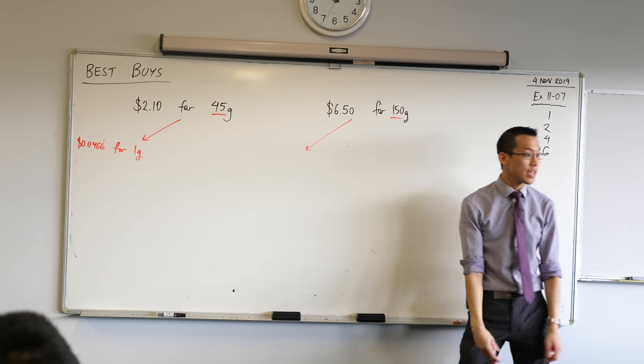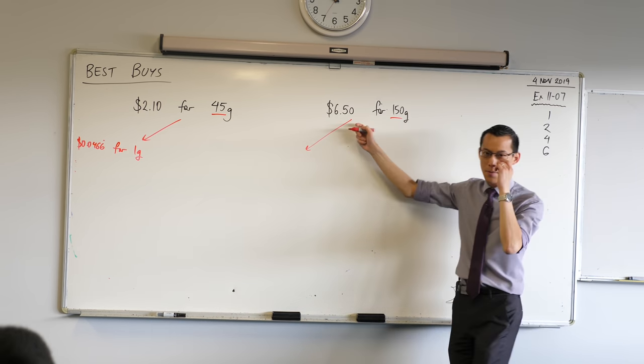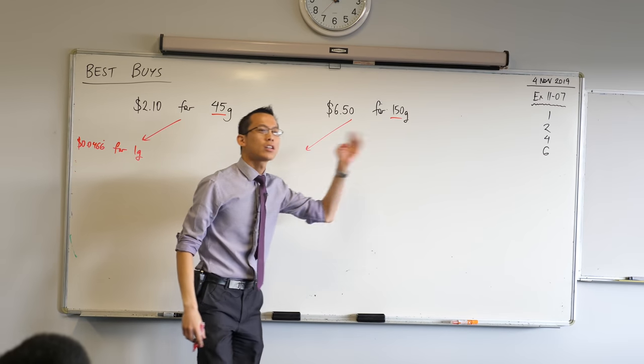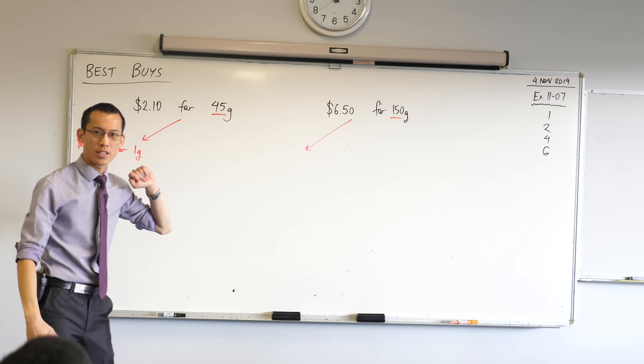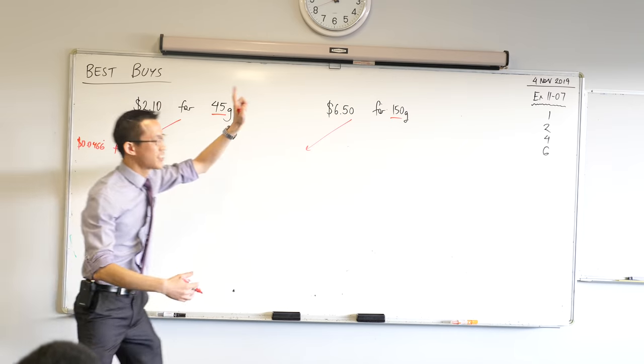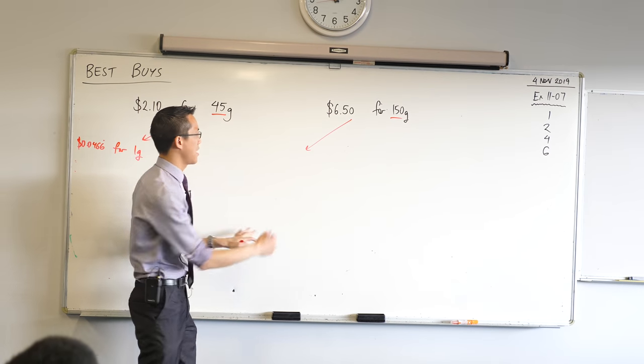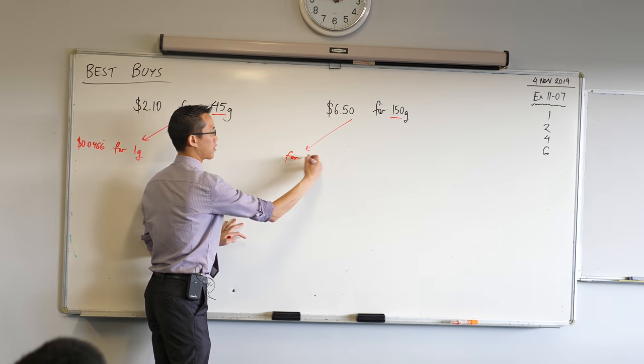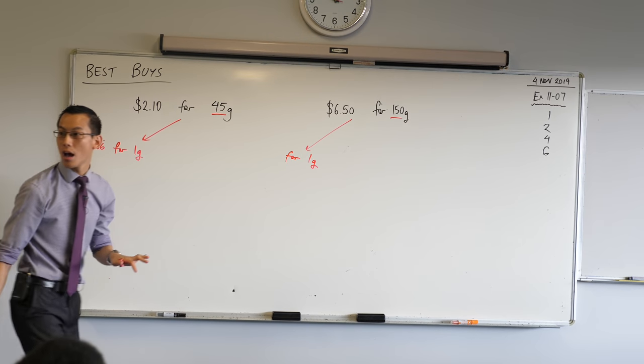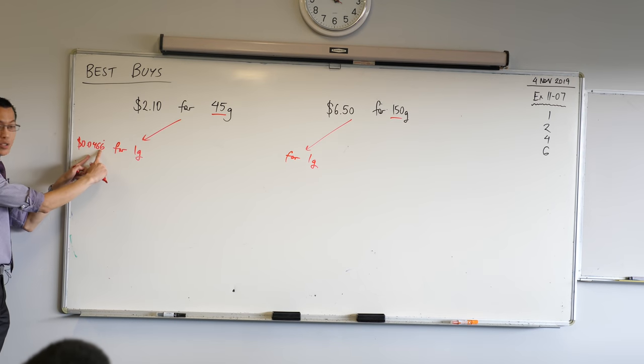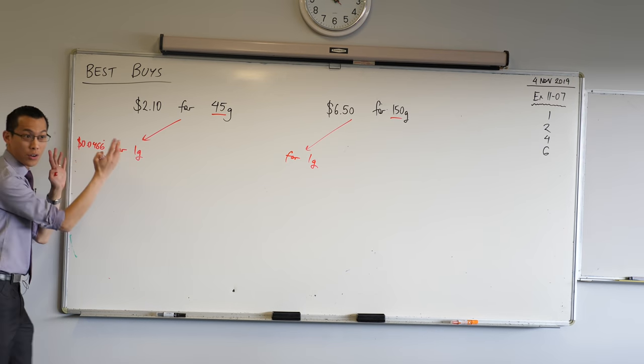And we can do the same thing over here. We can take this different amount, $6.50. We're not going to divide by 45 though. This time we're going to divide by? 150, because it's a new amount of mass, right? So what are we going to get for one gram in this case? 0.0433. Okay, so very close, but instead of sixes, we've got threes. Is that okay? Did that match what you got before, Eric?